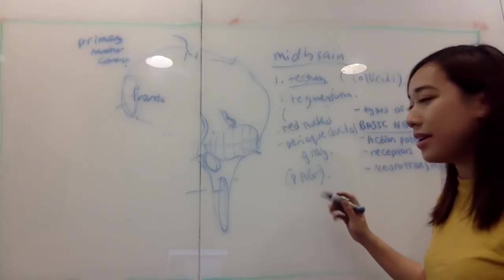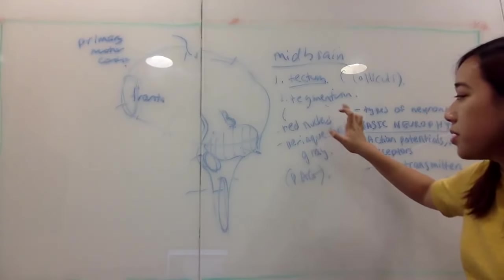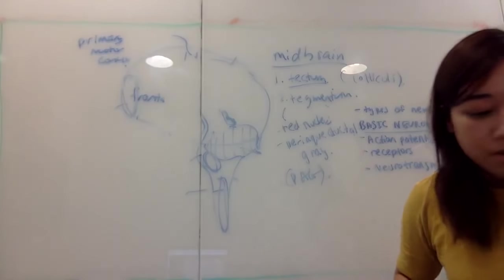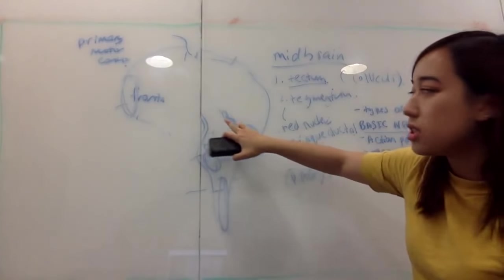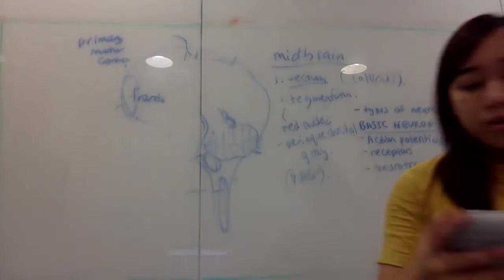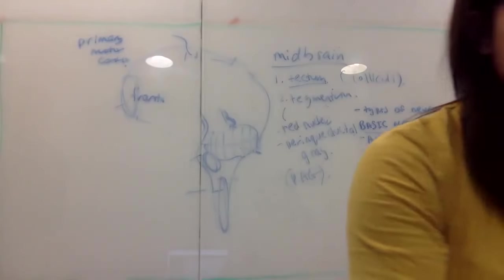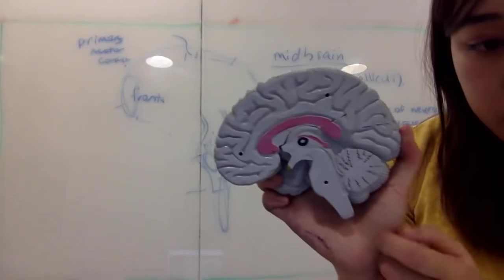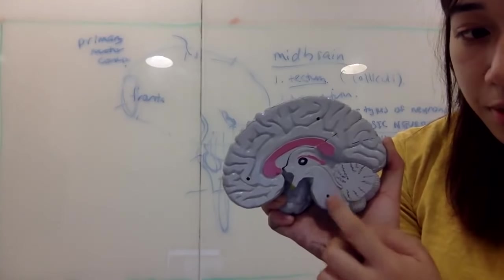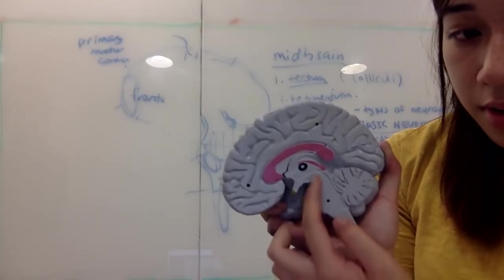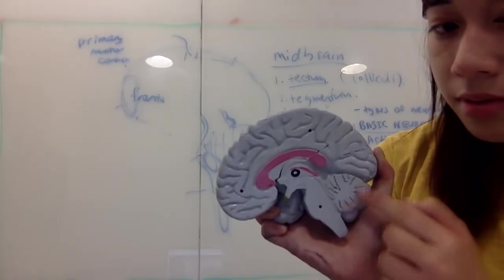The periaqueductal gray is associated with pain — specifically pain modulation. The red nucleus has a tract that is apparently not that useful in humans anymore, but it's inside the tegmentum. Your midbrain is a very small structure. On the model you can also see your thalamus, and your hypothalamus is actually a little bit in front of and below the thalamus.